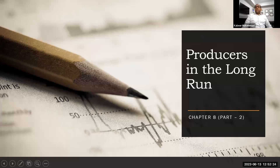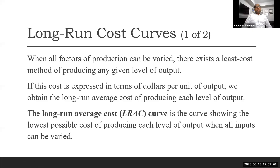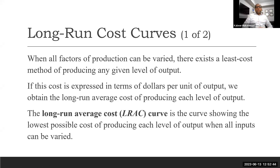This is the second part of the topic 'producers in the long run.' As we discussed in part one, in the long run all factors of production are variable, and there is a least-cost method of producing any given level of output. If this cost is expressed in terms of dollars per unit of output, we can obtain a long run average cost of producing each level of output.